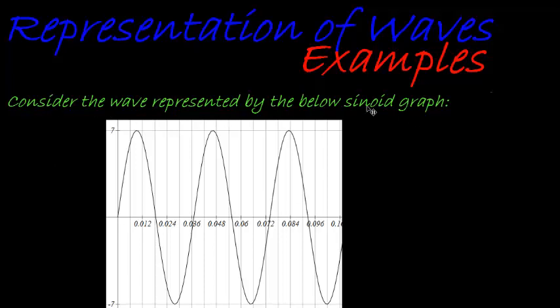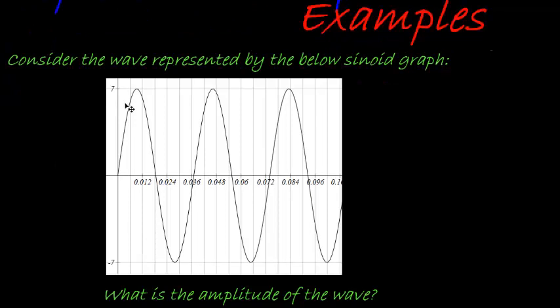Consider the wave represented by the below sinoid graph. So here we have a sinoid graph, and it's not on here, but we know that this is displacement and this is time. The question is what is the amplitude of this wave? Remember amplitude is the maximum displacement that it has. It starts here, and over time the maximum displacement is when it's there or there.